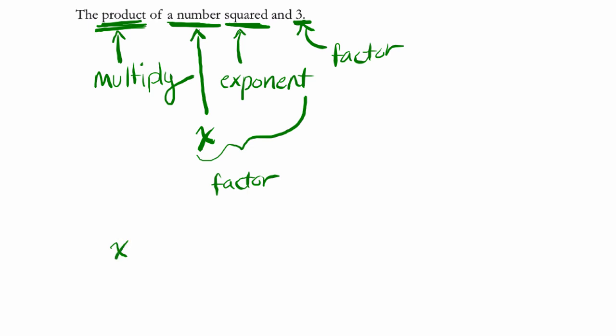A number squared is just x squared, and then we multiply that by three. More commonly, you'll see it written as three times x squared. The number is usually placed first, or just three x squared. These all mean the same thing. These are all equivalent expressions. Thank you.